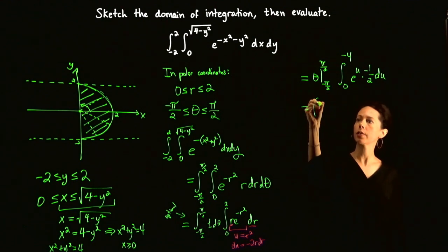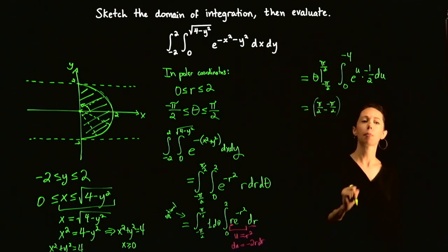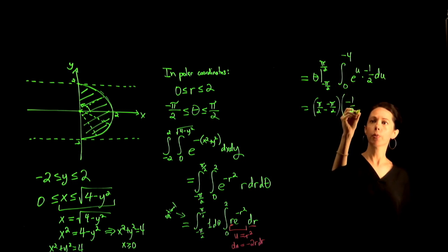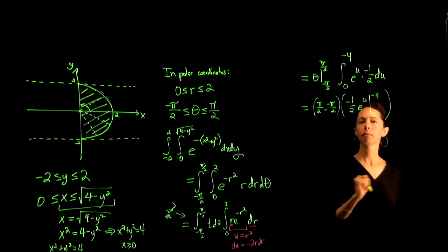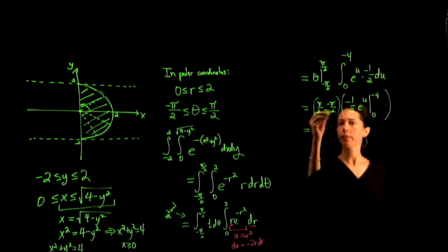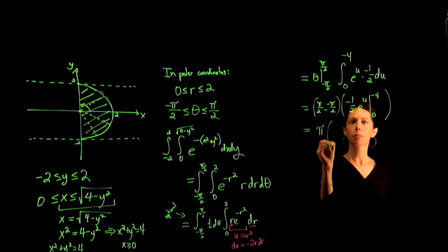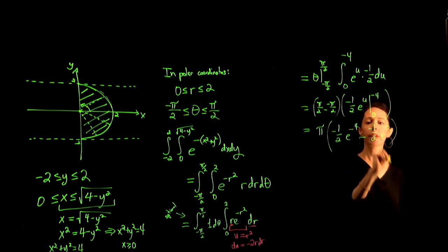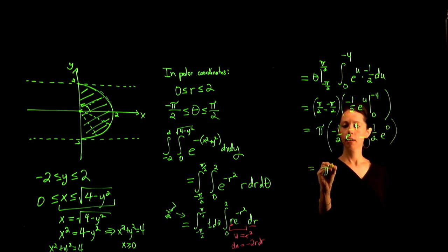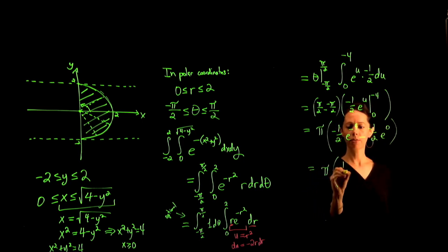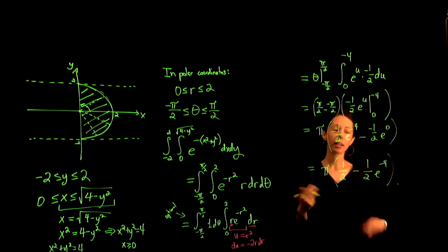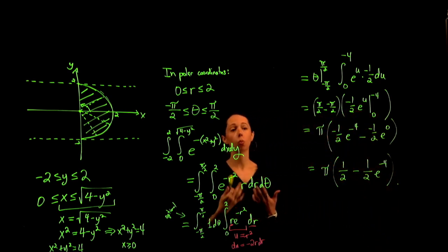The theta integral gives pi over 2 minus negative pi over 2, which equals pi. The r-integral gives negative 1 half times e to the u evaluated from 0 to negative 4, which is negative 1 half e to the negative 4 minus negative 1 half e to the 0. Since e to the 0 is 1, this simplifies to 1 half minus 1 half e to the negative 4. The final answer is pi times the quantity 1 half minus 1 half e to the negative 4.